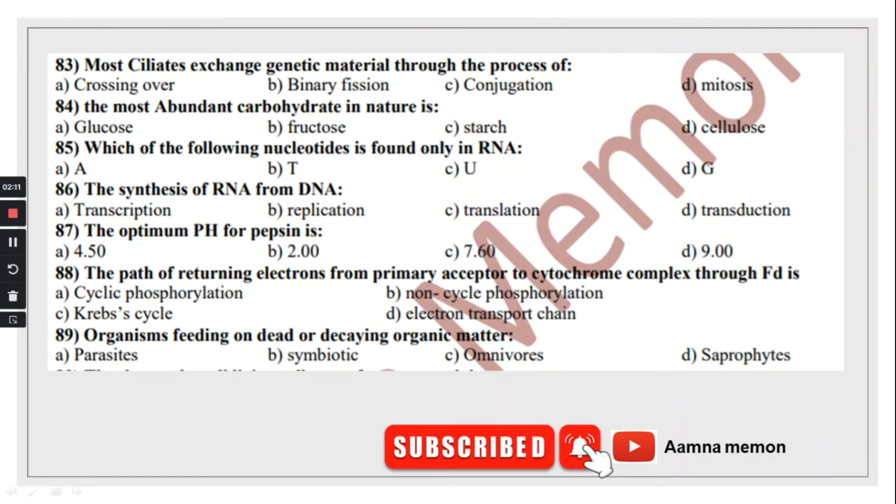Most ciliates exchange genetic material through the process of conjugation. The most abundant carbohydrate in nature is cellulose. Which of the following nucleotides is found only in RNA? Uracil. The synthesis of RNA from DNA is transcription. The optimum pH for pepsin is 2. Organisms feeding on dead or decaying organisms are saprophytes.